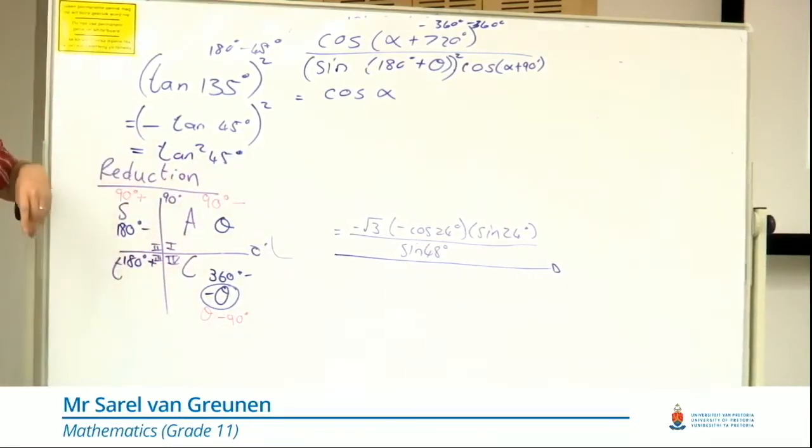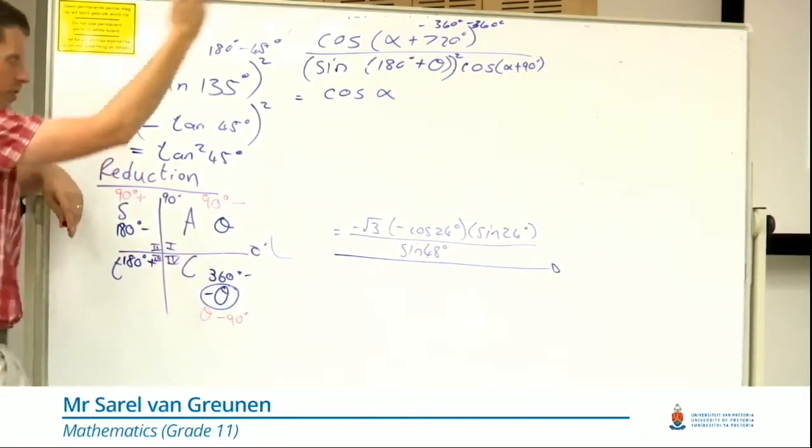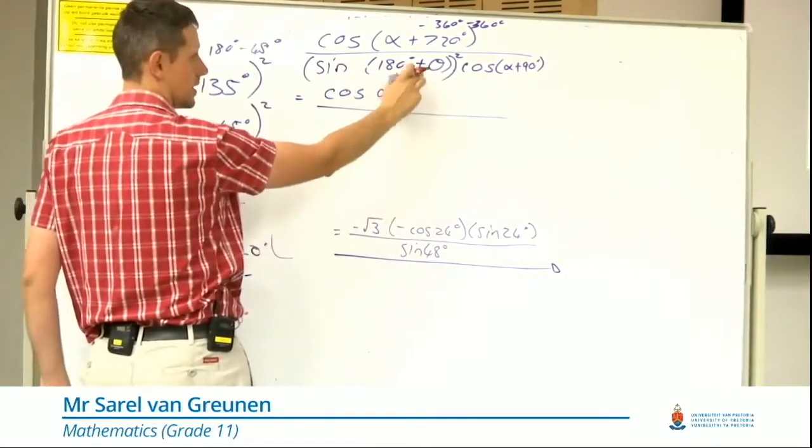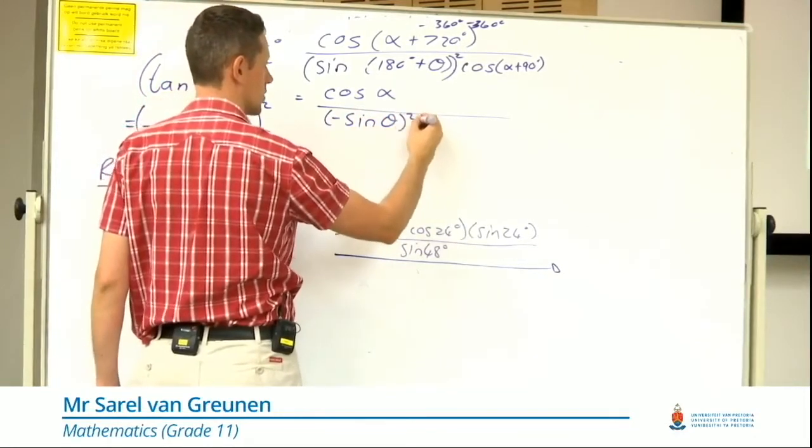Be careful of squares, cubes, fourth powers, all of those, because we need to move it outside. Like in this case, sin of 180 plus is third quadrant, so I'm actually at negative sin theta squared.